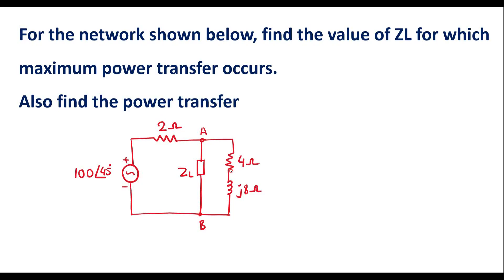This is the given circuit. We're supposed to calculate the value of ZL so that the maximum power will be delivered to load impedance, that is ZL.